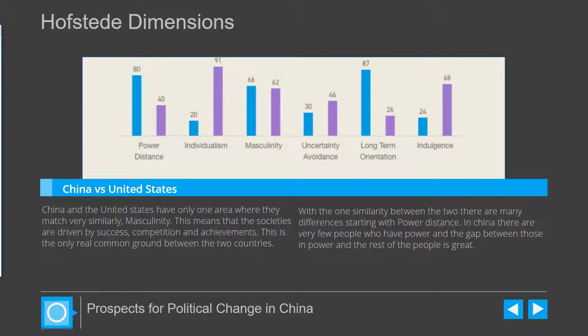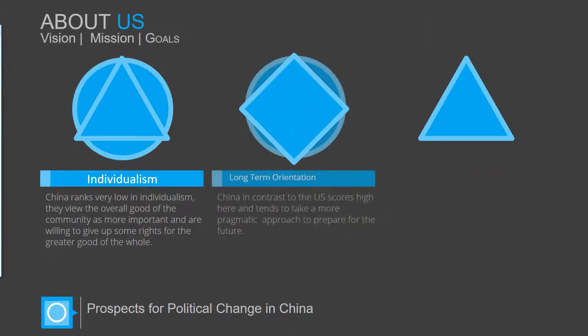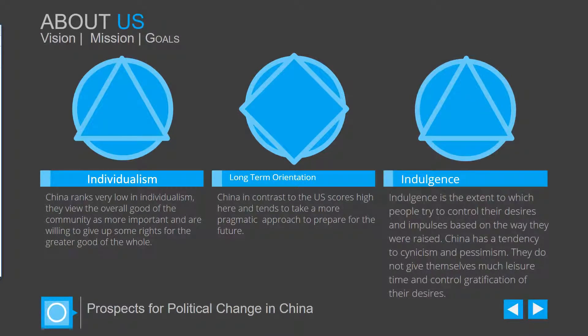The next area of difference is power distance. In China, there are very few people who control power, and the gap between those in power and the rest of the people is very large, unlike in the United States, where there still is a power gap — it is, however, just not as large as in China. Individualism is another area where China ranks very low, unlike the United States, and they view the overall good of the community as more important and are sometimes willing to give up certain individual rights for the greater good.